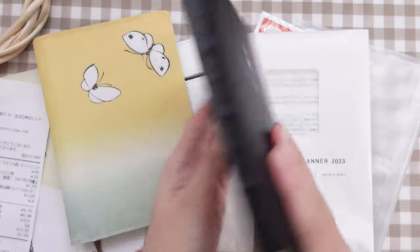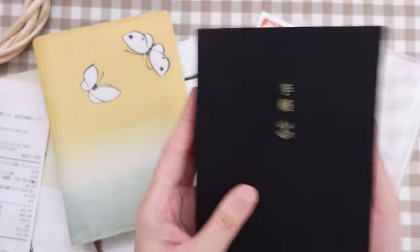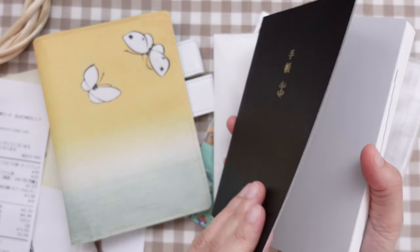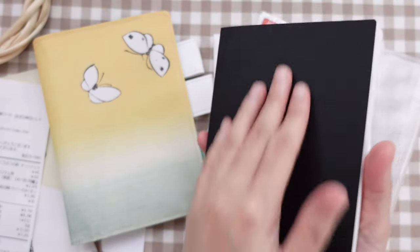So I got the Hobonichi Techo Planner, one page per day in English, and January start. So this is what it looks like. It looks very classy. I love the cover. I love how light it feels. And the cover is relatively thin, but it feels sturdy.